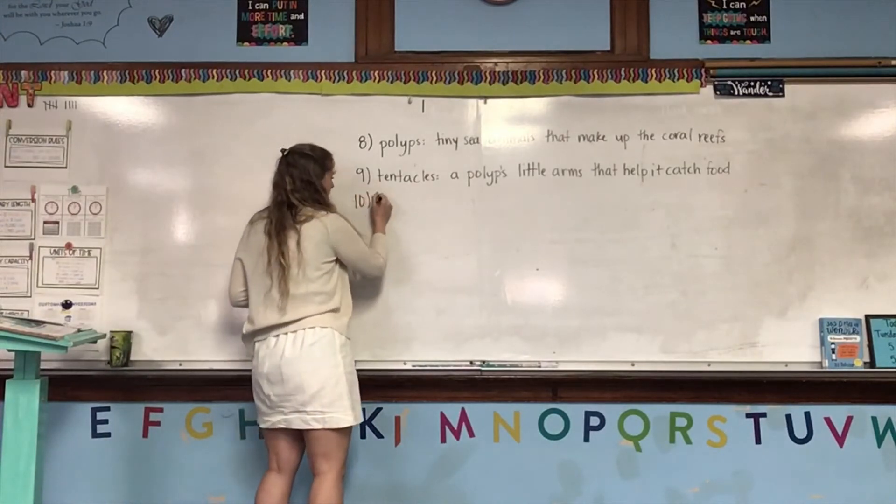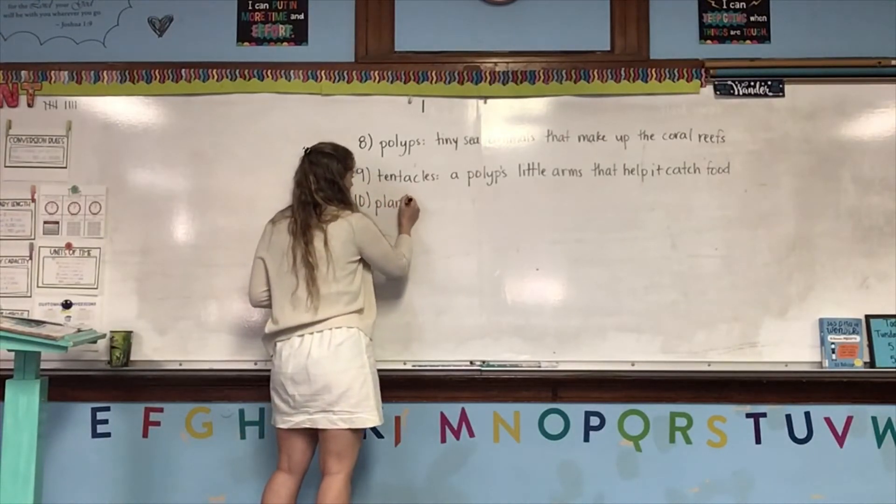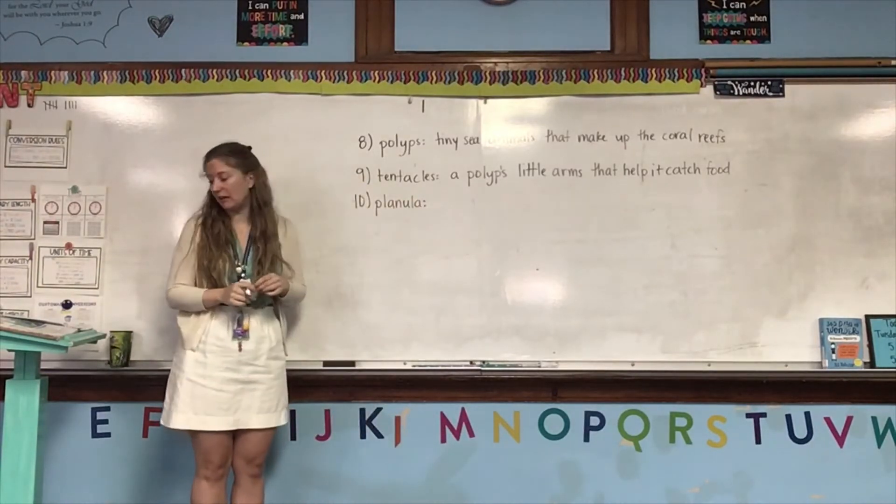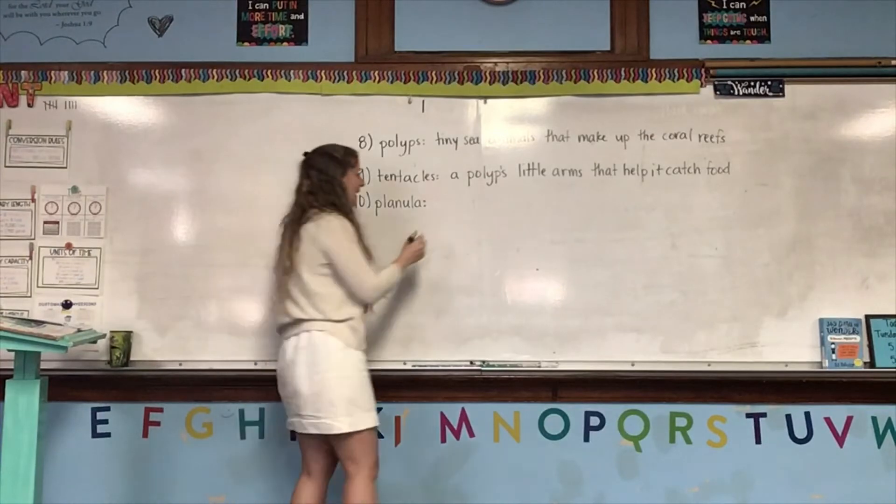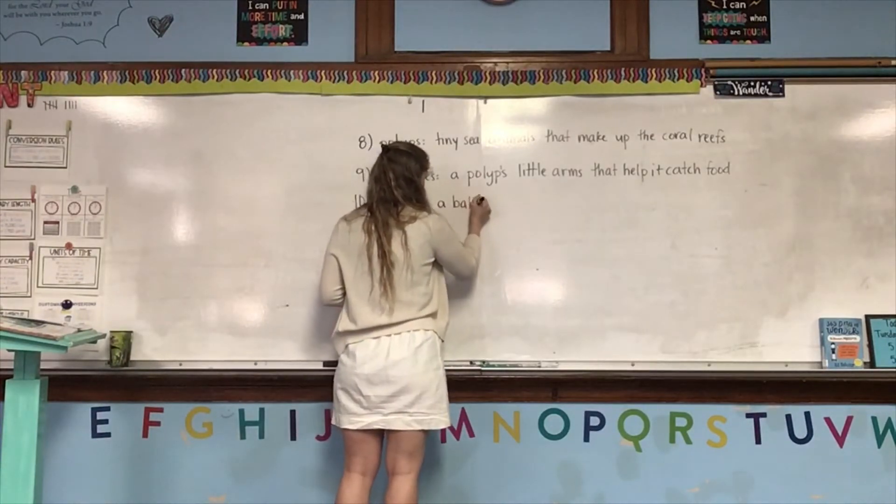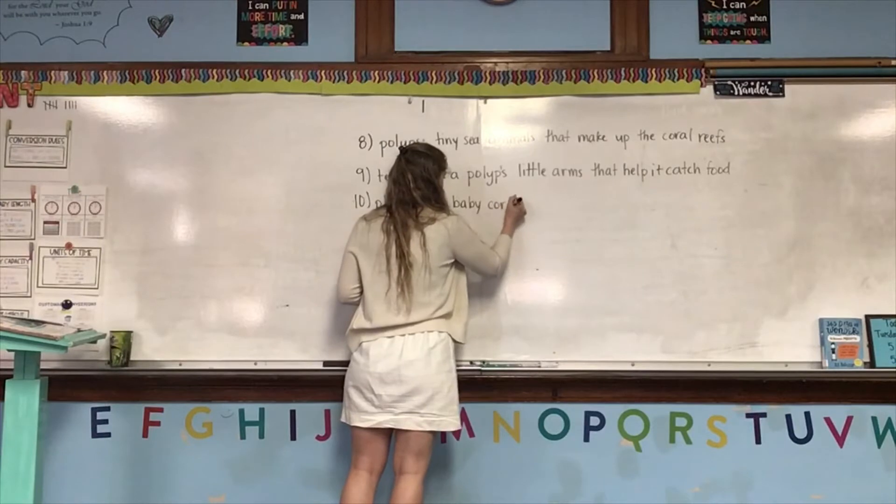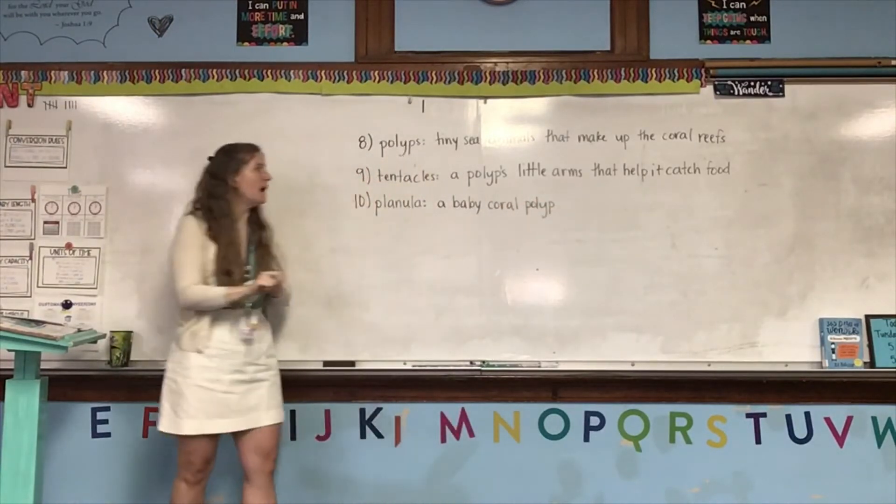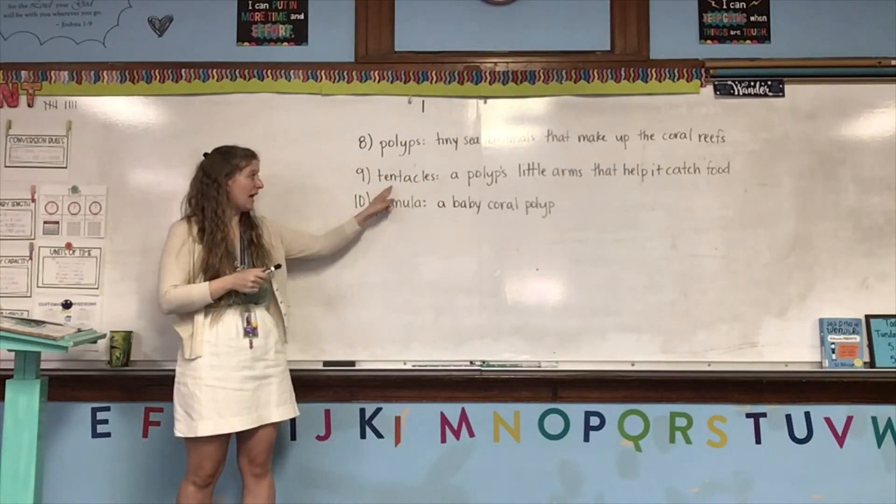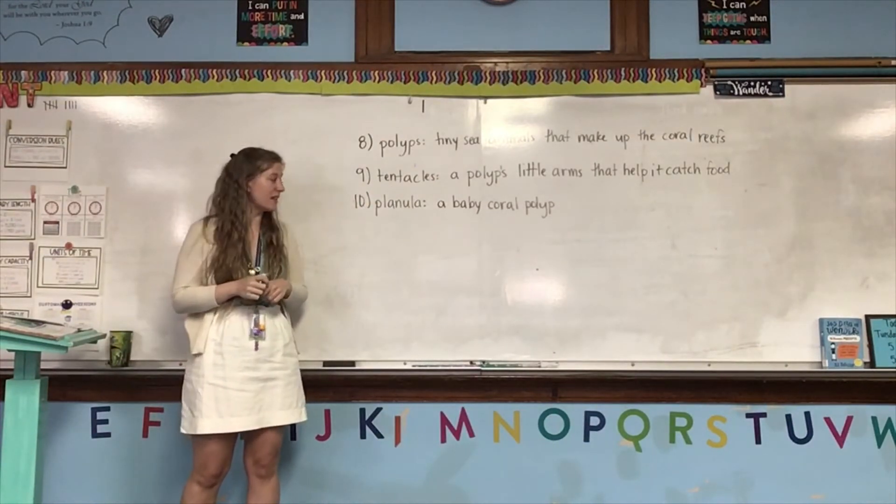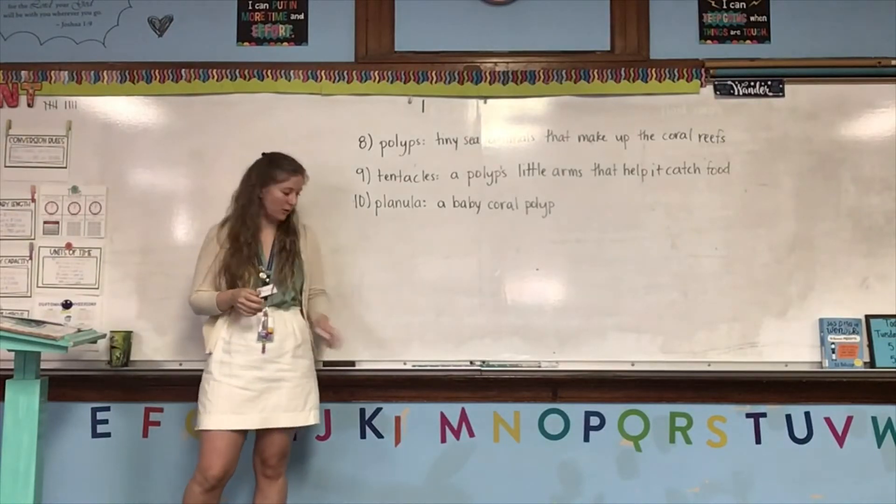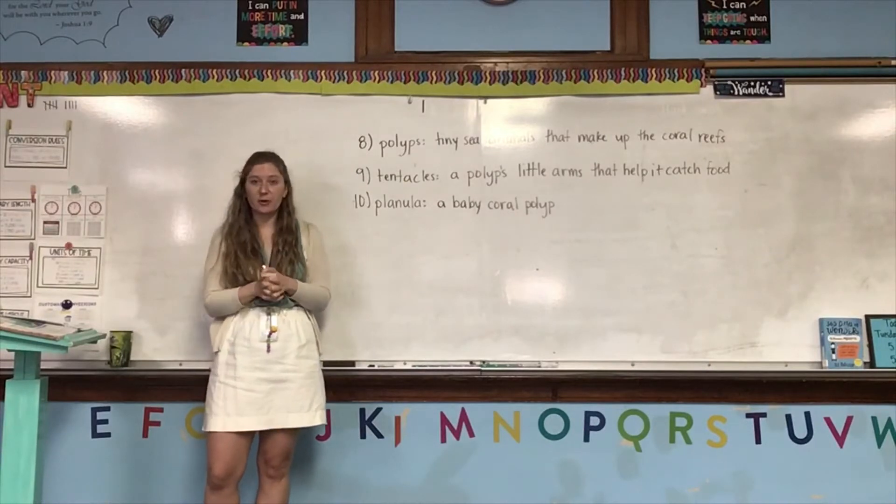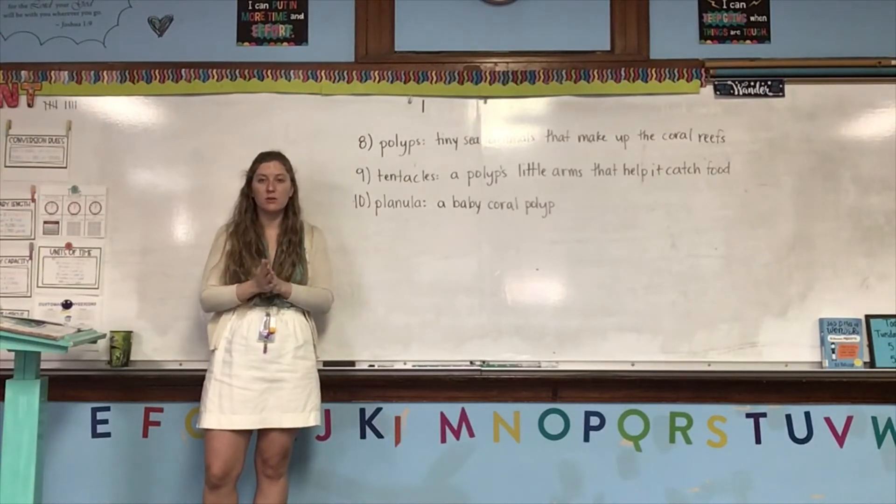And then last word, number ten is the word planula, P-L-A-N-U-L-A. And a planula is a baby coral polyp. So, the polyps are what make up the coral. They have tentacles so that they can catch food. And a planula is a baby coral polyp. Okay. So, that's it for vocabulary. Make sure that you have all of these written in your notebook.